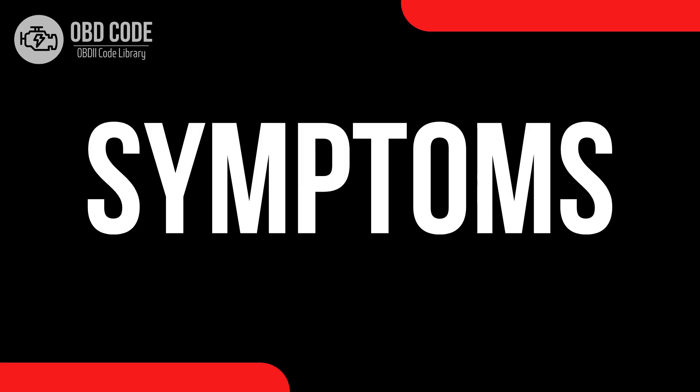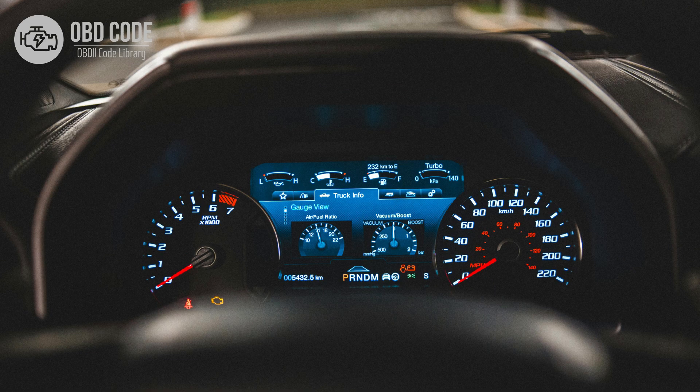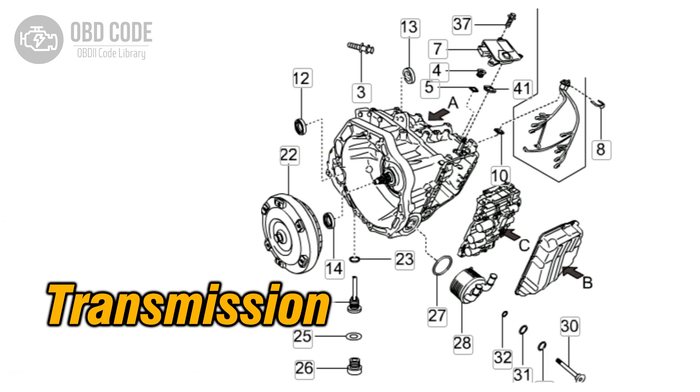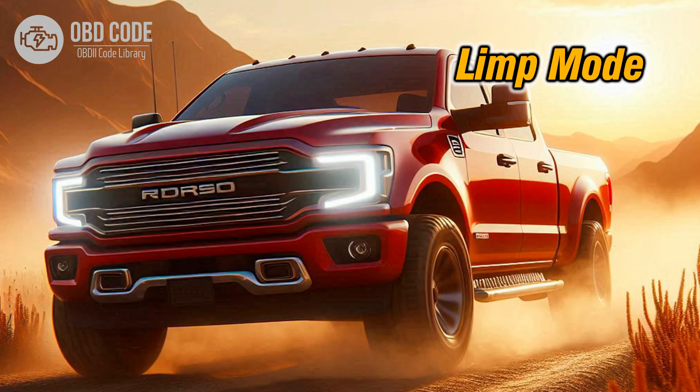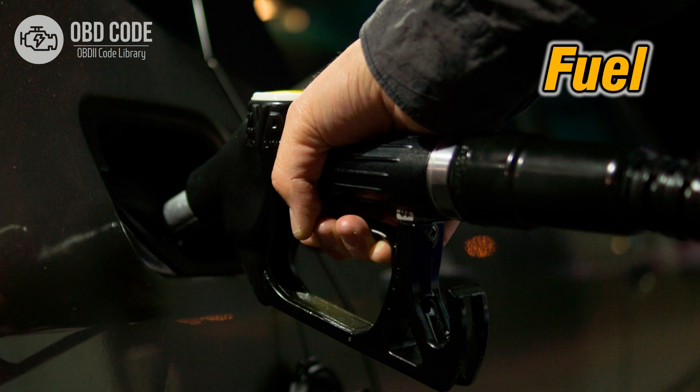Code P0772 symptoms: 1. Check engine light illuminated on the dashboard. 2. Transmission shifting issues, such as harsh or delayed shifting, or failure to shift at all. 3. Vehicle may go into limp mode to prevent further damage. 4. Decreased fuel efficiency due to improper transmission shifting.